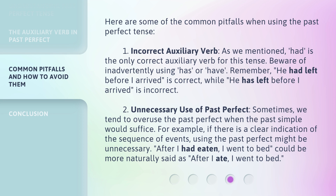Number 2: Unnecessary use of past perfect. Sometimes we tend to overuse the past perfect when the past simple would suffice. For example, if there is a clear indication of the sequence of events, using the past perfect might be unnecessary. "After I had eaten, I went to bed" could be more naturally said as "after I ate, I went to bed."